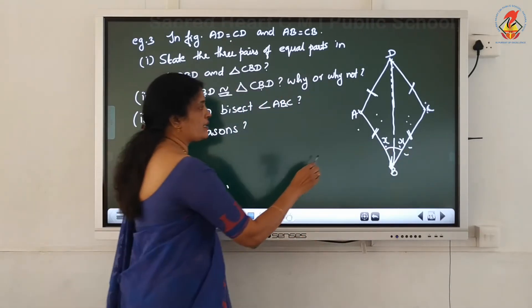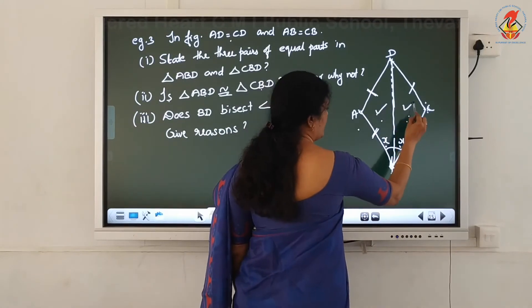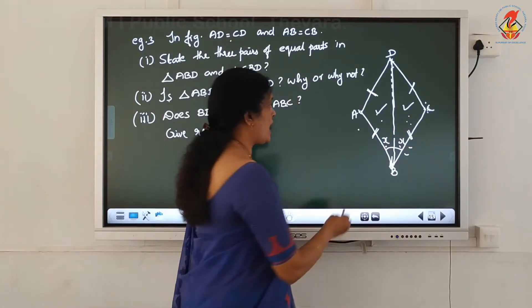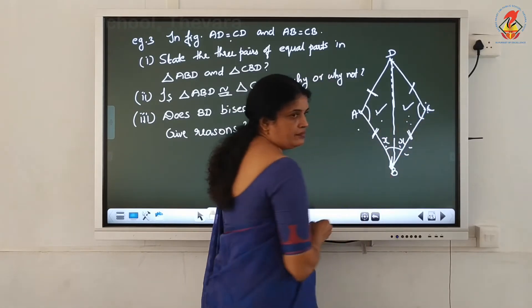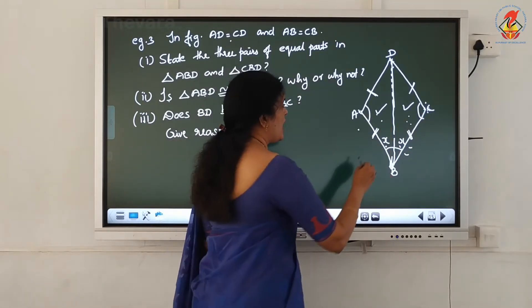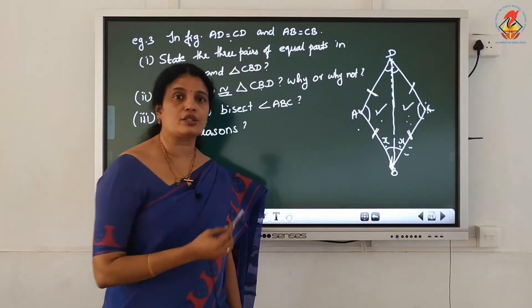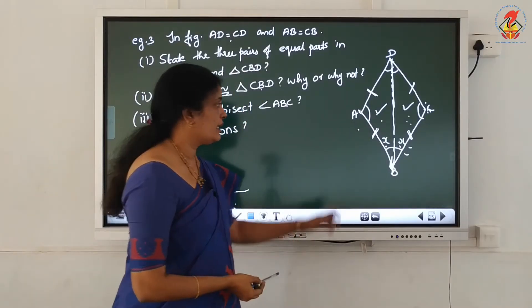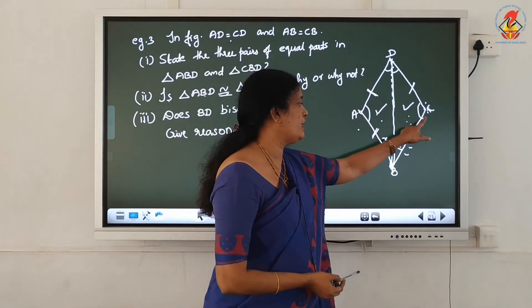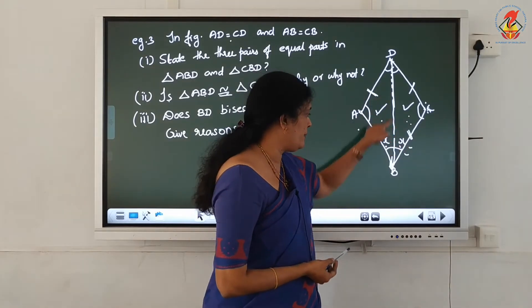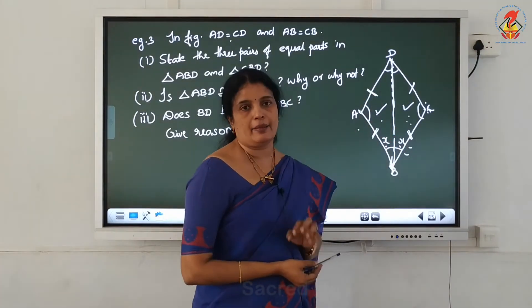Since these 2 triangles are congruent, corresponding parts of congruent triangles are equal. Then: angle A equal to angle C. Next: angle ADB equal to angle CDB. Next: angle ABD equal to angle CBD. Angles are also equal. That means angle ABD equal to angle CBD. What is the meaning? The BD bisects angle ABC.